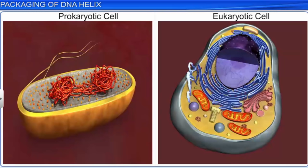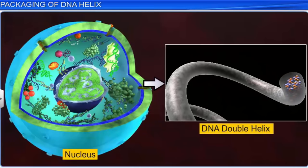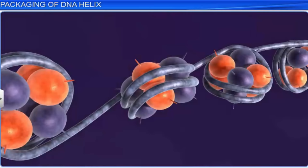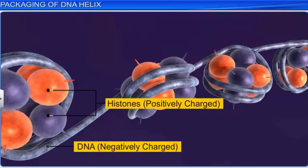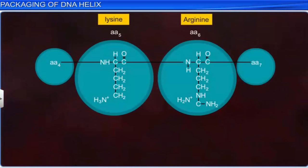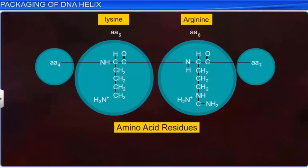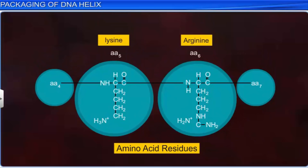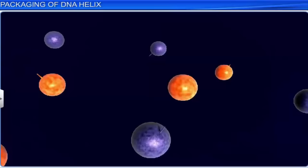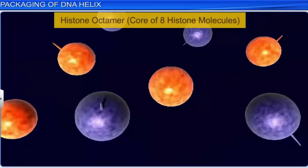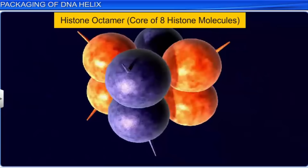On the other hand, in eukaryotes, the manner in which a DNA double helix is packaged within the cell is more complex. Eukaryotes contain a single molecule of negatively charged DNA packaged around a spool of positively charged basic proteins known as histones. The charge in a protein is decided by the abundance of amino acid residues with charged side chains. In this case, the proteins are positively charged as the histones are rich in basic amino acid residues like lysine and arginine, which carry positive charges in their side chains. Furthermore, the histones are arranged to form a unit of 8 molecules known as the histone octamer.